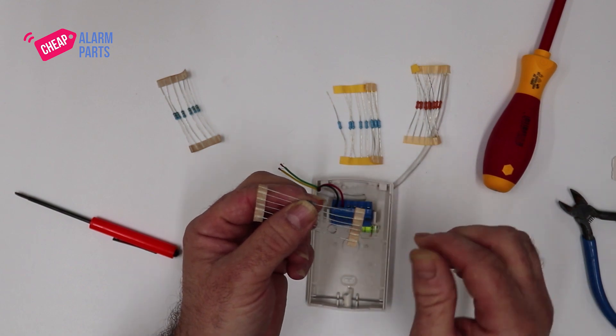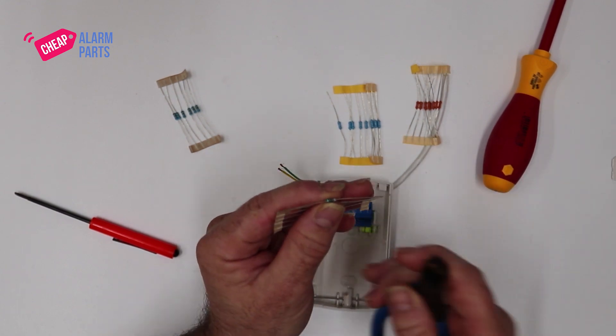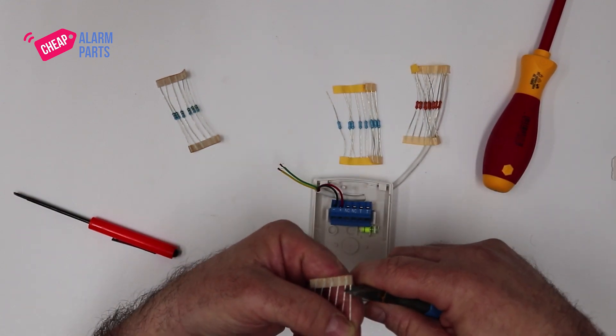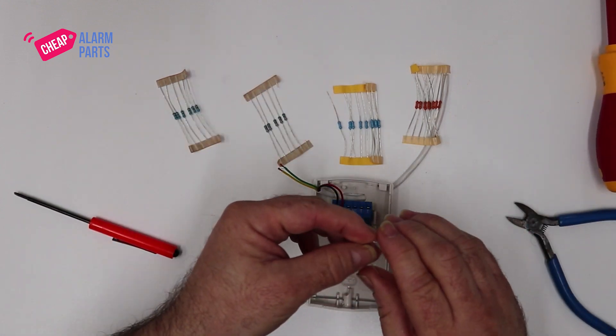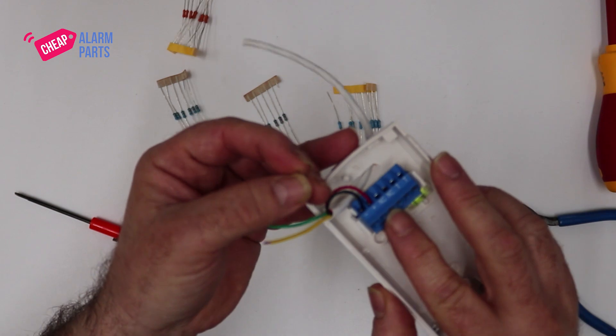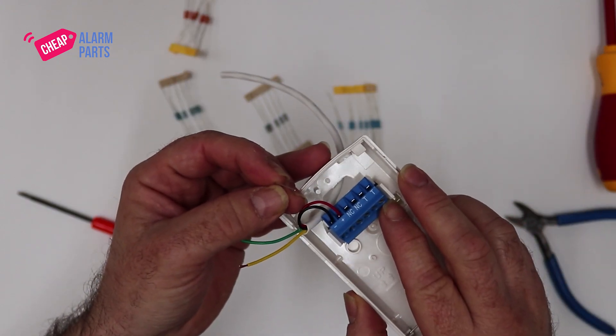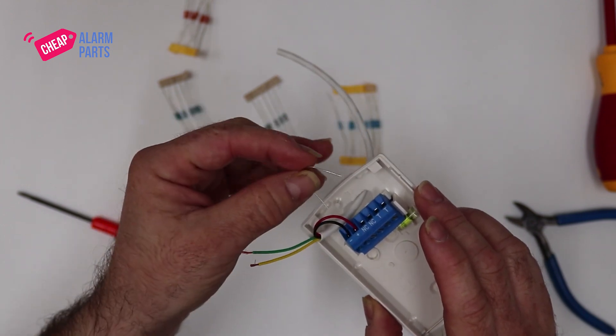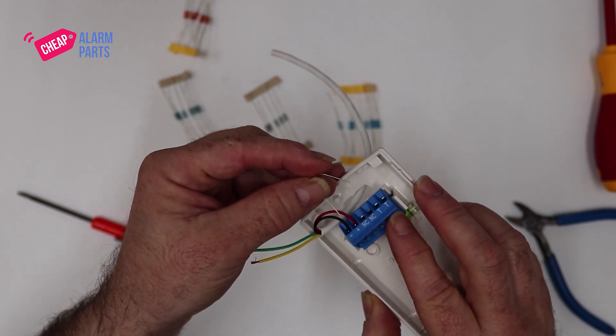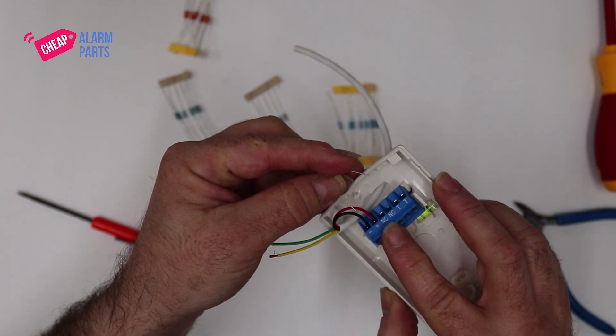Okay, now the resistor goes from one normally closed contact to the tamper terminal. These terminals are not polarity conscious, so it doesn't matter which way you put in the resistor or if you use the green cable in one slot and the yellow cable in the other. So let's put the resistor in like that.